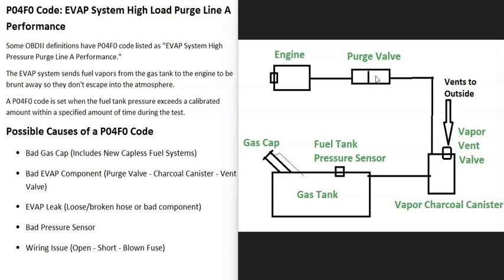The gas vapors leave the charcoal canister and go up to the engine compartment to what's called the purge valve. The purge valve stays closed when the engine isn't running so gas vapors don't escape. When the engine is running, the computer sends a signal to open it, and the gas vapors go into the engine to be burned away.